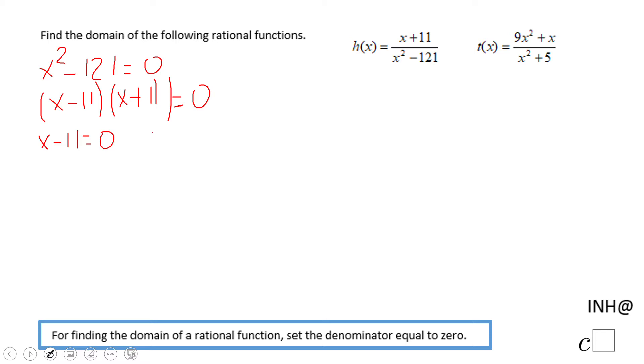Now, zero product property is going to give us x minus 11 equals zero, which is going to give us x equals 11, and x plus 11 equals zero, which is going to give us x equals negative 11. And then, the only thing I'm going to do, I'm going to cross this equal sign, and that means x cannot be 11 or negative 11. That is the domain of h(x).